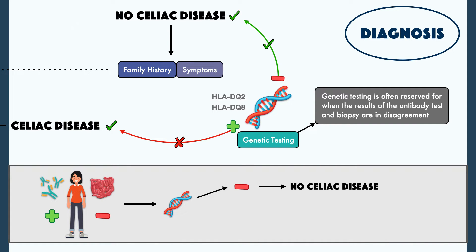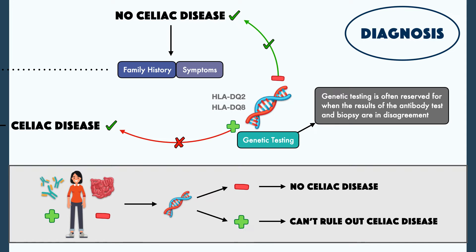For instance, if a patient has a positive antibody test and a negative biopsy, then a genetic test can be pursued. If the genetic test is negative, then it's very likely that the patient doesn't have celiac disease, and the antibody test can be considered a false positive. If the genetic test is positive, then you can't rule out celiac disease. Another biopsy may be performed, or the patient may be treated with a gluten-free diet and have their antibody level reassessed at a later time. I just wanted to give you an idea of the process a patient might go through before they present to you with a formal diagnosis.